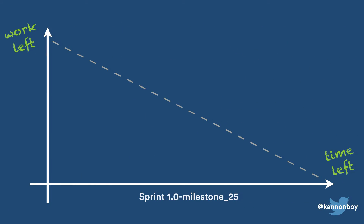Automatic issue transitions are great for everybody. Product managers and team leads are happy because issues are kept up to date automatically, and the burndown chart for the sprint is burning down correctly. Developers are happy too, because they can focus on development and not have to worry about wasting time manually updating Jira issues.